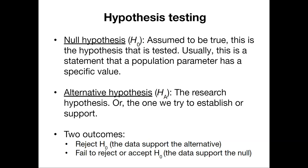Our alternative hypothesis is the research hypothesis, and this is the one we try to use the data to establish or support. When we do hypothesis tests, we only have two outcomes. We can reject the null hypothesis, that is the data support the alternative hypothesis. Or we can fail to reject, or we can accept the null hypothesis, that is the data support the null hypothesis.